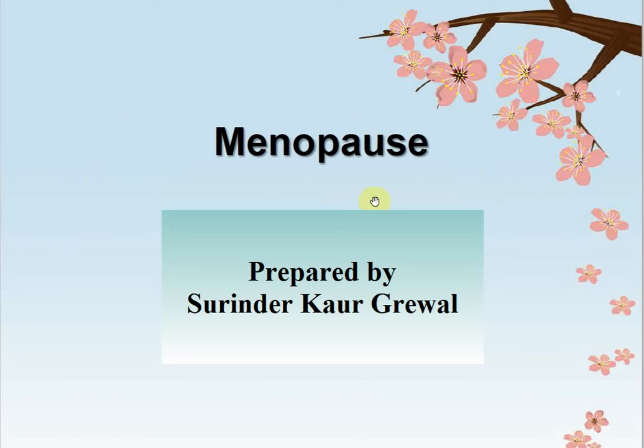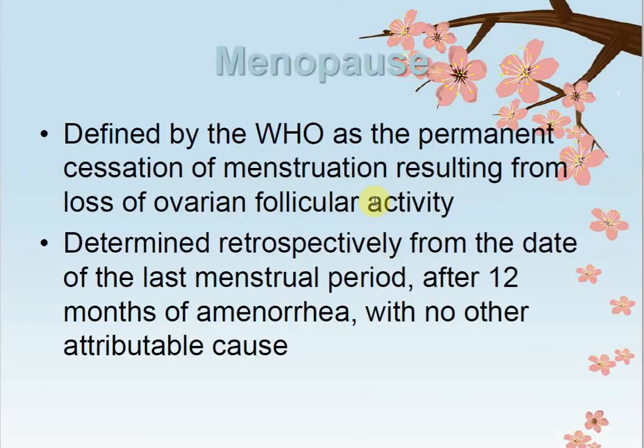Good morning students, today we are going to discuss about menopause. Menopause is defined by the WHO as the permanent cessation of menstruation resulting from loss of ovarian follicular activity.